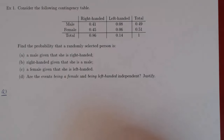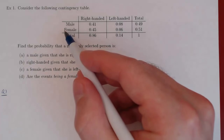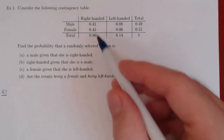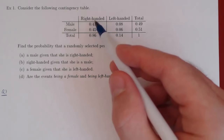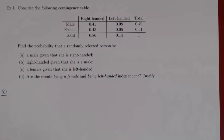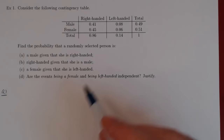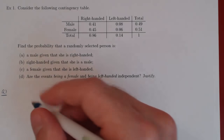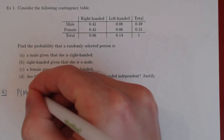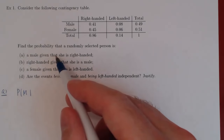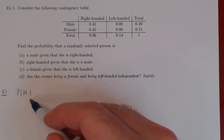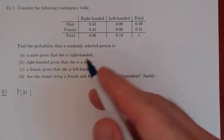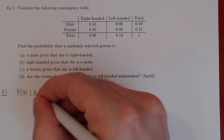We'll let M denote the event the person is a male, F the event the person is female, R the event the person is right-handed, and L the event the person is left-handed. So we are asking, if we select a person at random, what is the probability that the person is a male — so P of M — given that we know the person is right-handed, so given R.